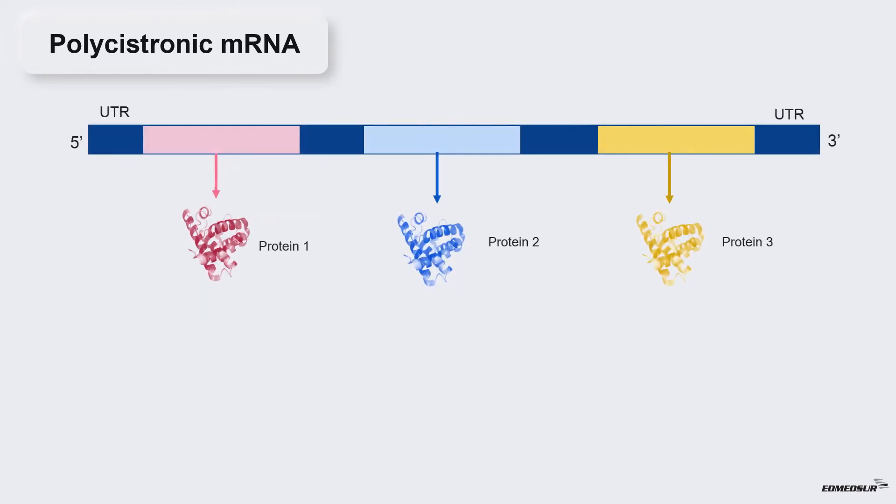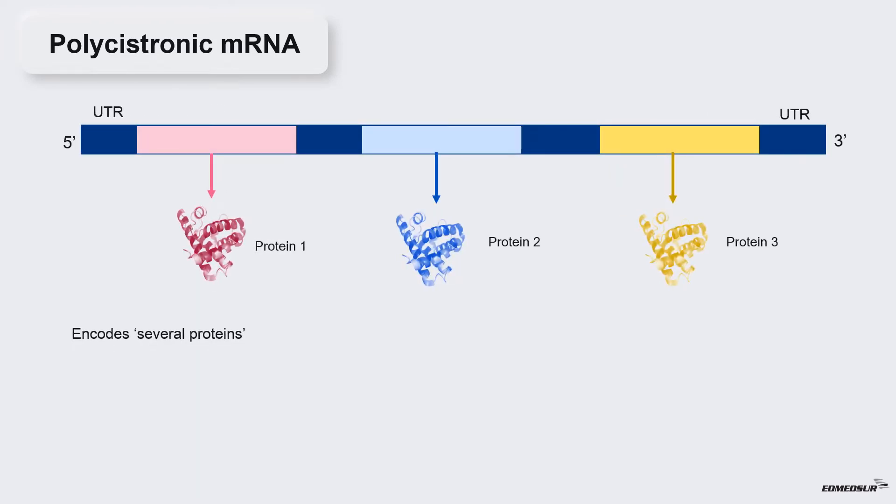Polycistronic mRNA. Polycistronic mRNA encodes several proteins. It is frequently found in prokaryotes. It helps in producing all proteins related to a particular function at the same time.